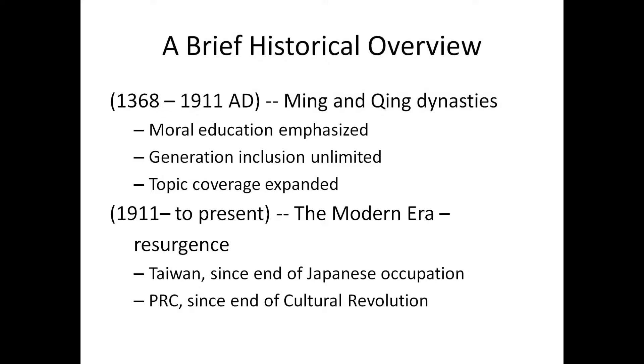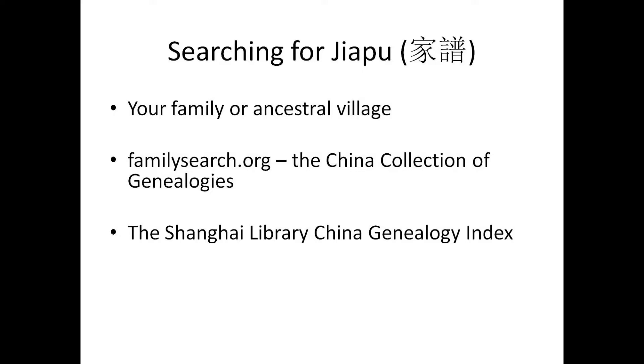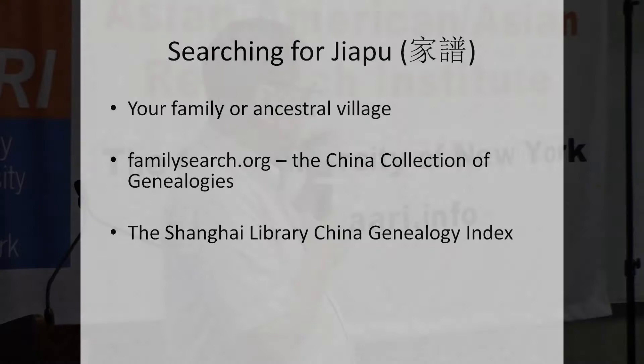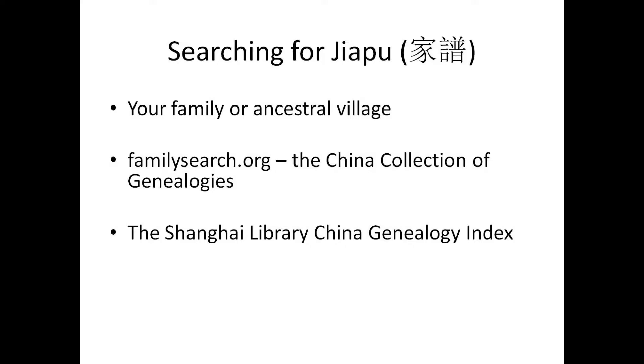Let me give you a few tips on searching for genealogies — searching for Jiapu. Start with your own family and your own ancestral village, because that is the most direct way of finding your family's genealogy. Henry said yesterday: the only way to do it is to find your village and find your genealogy. FamilySearch.org has about 30 to 40,000 genealogies in the collection now, and they're expanding every year as they continue to collect.